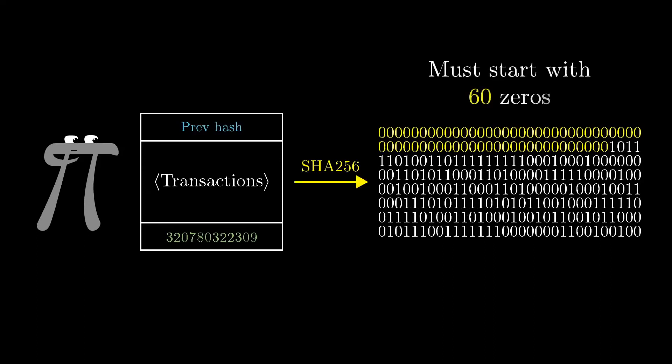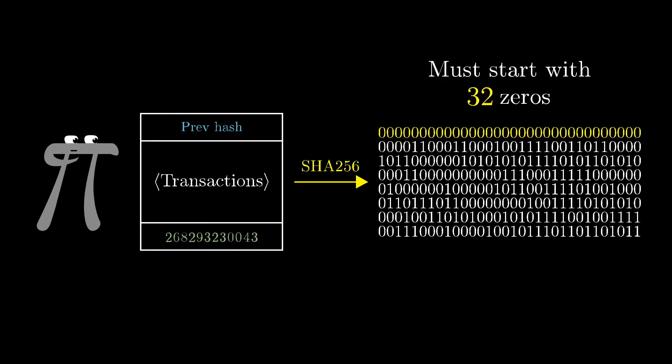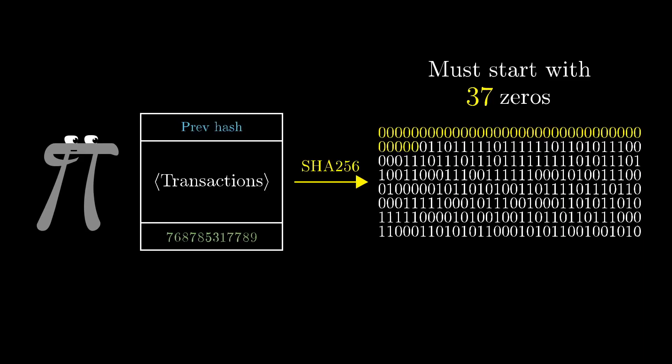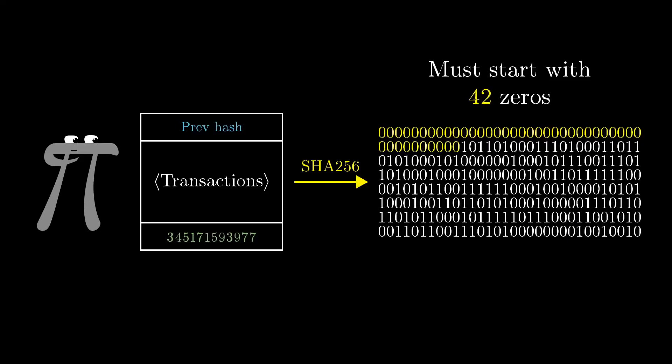There's just a few details to clear up. Earlier I said that the proof of work might be to find a special number so that the hash of the block starts with 60 zeros. Well, the way the actual Bitcoin protocol works is to periodically change that number of zeros so that it should take, on average, 10 minutes to find a new block.